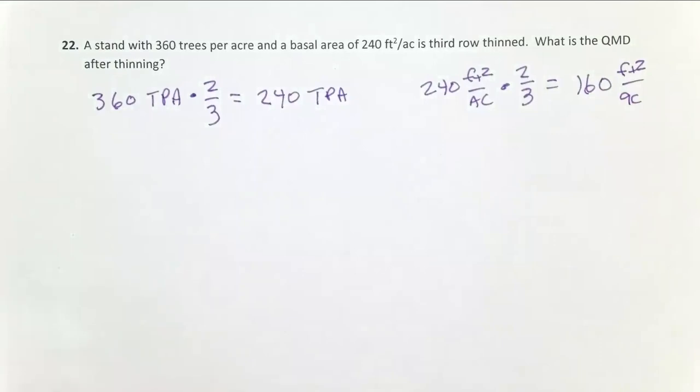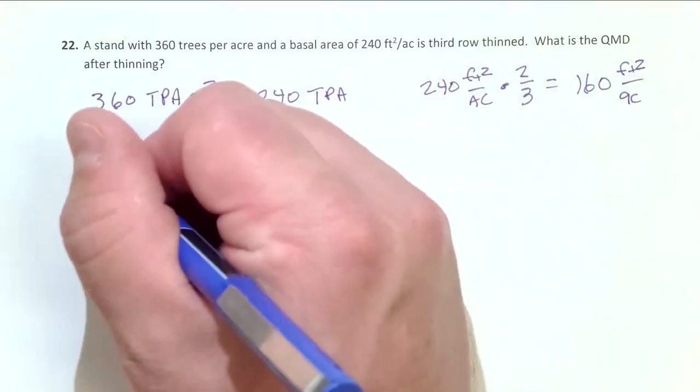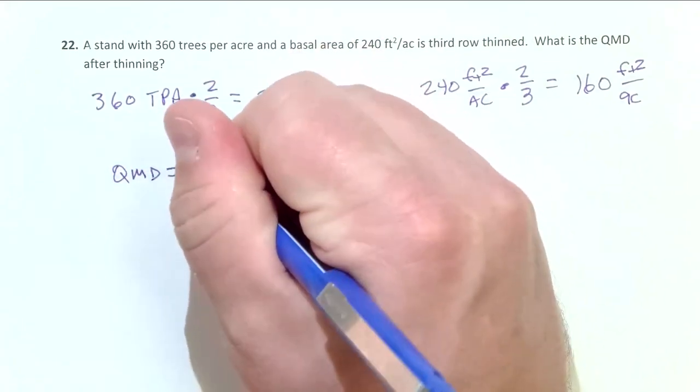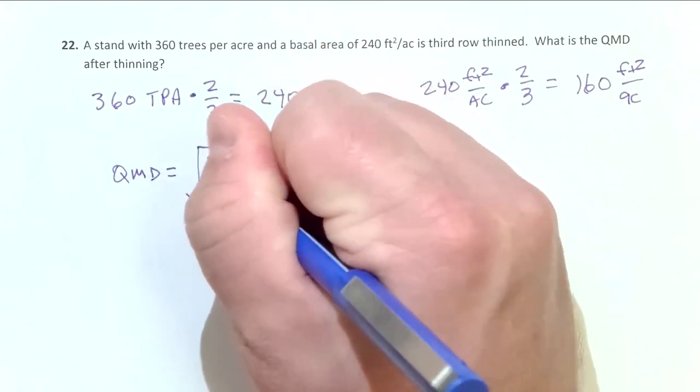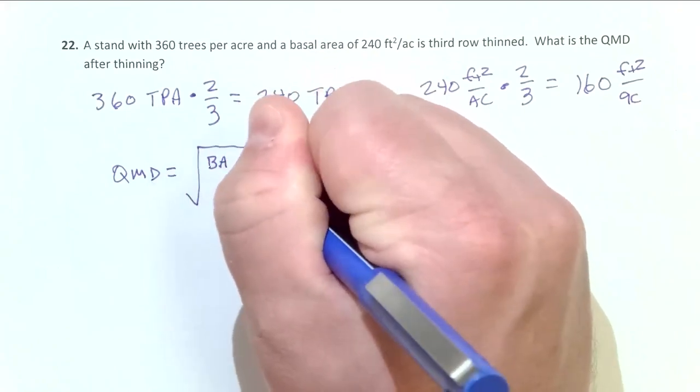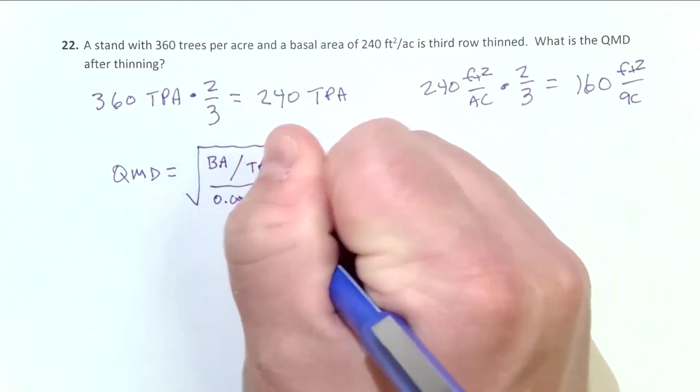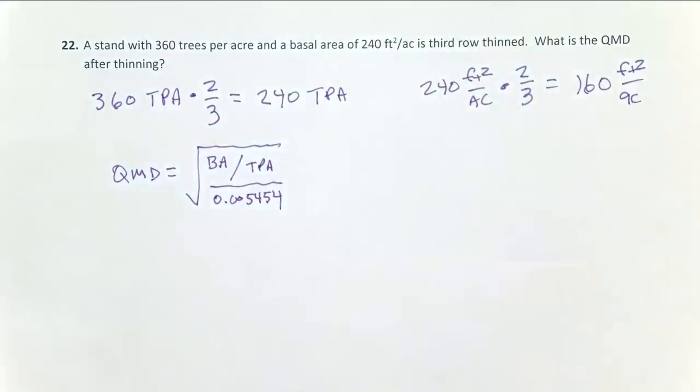Okay. Now we need to know how to calculate QMD. QMD equals the square root of basal area over trees per acre divided by 0.005454. And so I have all the data I need. This is the plug-in numbers.